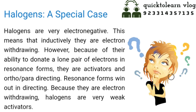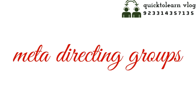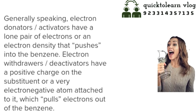Meta directing groups are electron withdrawers and deactivators. Examples include -NO₂, -NR₃⁺, -SO₃H, -CN, carbonyl groups (-CHO), -CO₂R, and -COOH. These are the groups which are meta directing groups.